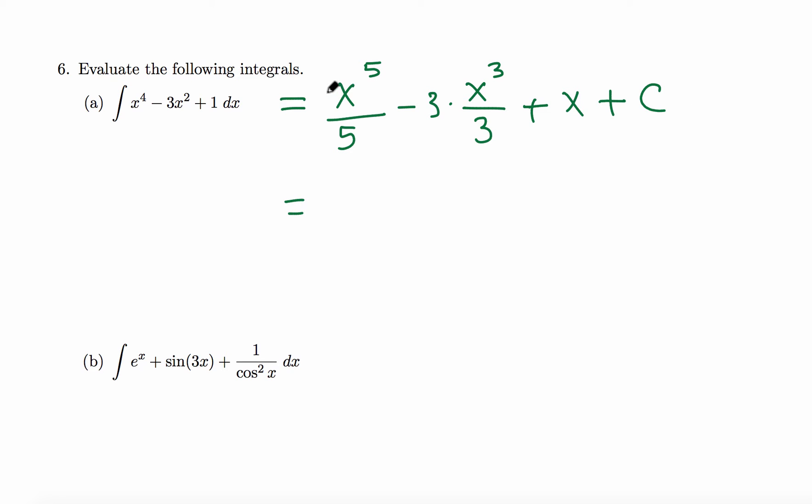Let's simplify. We can write one-fifth of x to the fifth, or x to the fifth over 5. 3 and 3 cancel, so minus x cubed plus x plus c. Final.